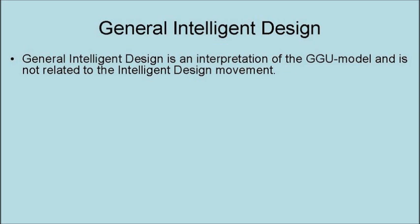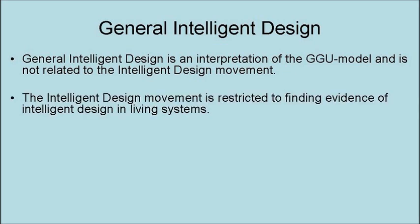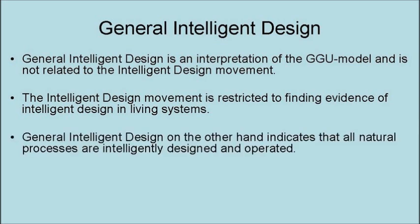General intelligent design is an interpretation of the GGU model and is not related to the intelligent design movement. The intelligent design movement is restricted to finding evidence of intelligent design in living organisms. General intelligent design, on the other hand, indicates that all natural processes are intelligently designed and operated.